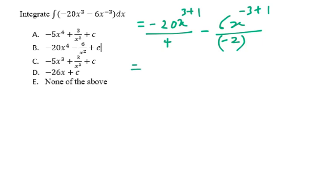Hence, simplifying will give you negative 5x to the power of 4, and the negative and negative here will give you positive.